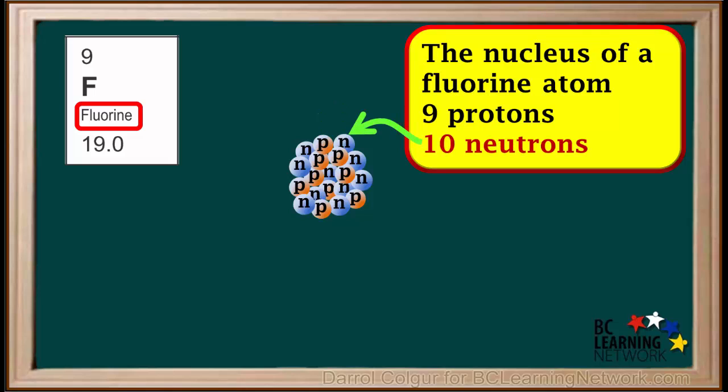Almost all fluorine atoms have 10 neutrons in their nucleus. The number of neutrons does not change when an atom becomes an ion, and neutrons have no effect on charge.